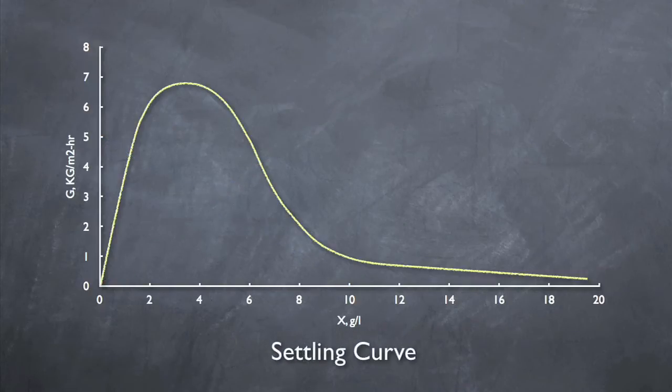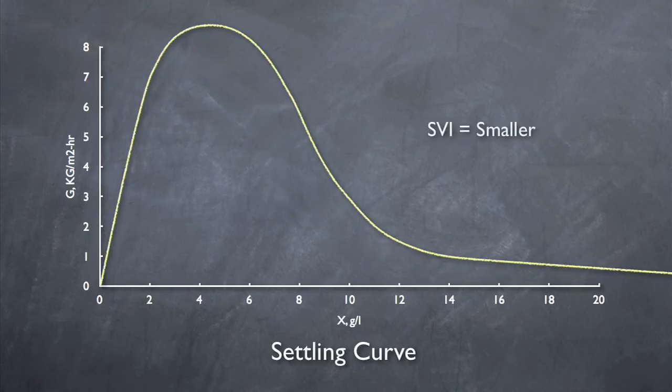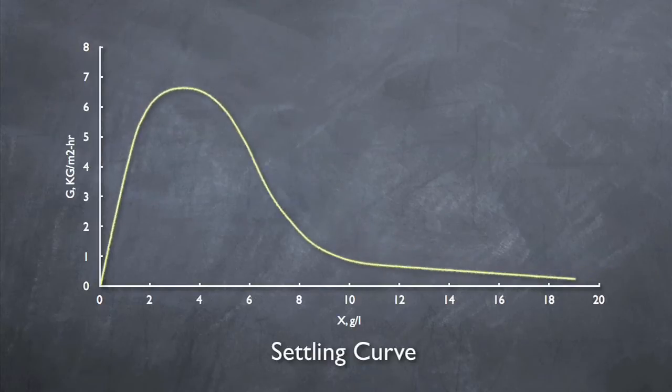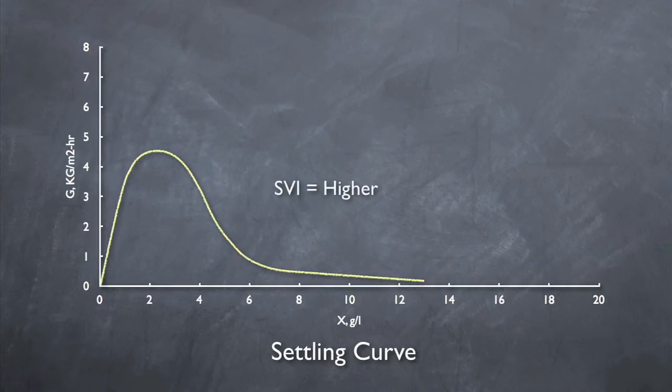The first component is the settling curve. This curve is developed by performing velocity settling tests at various concentrations of mixed liquor on site. However, empirical equations based on the sludge volume index, SVI, have been developed and are plenty accurate for using and deriving this curve. A smaller SVI, which represents faster settling, results in a larger settling curve. A higher SVI, which represents slower settling, results in a smaller settling curve.